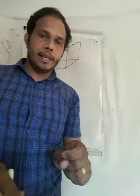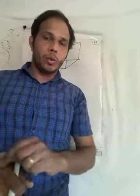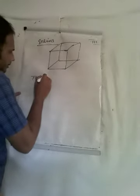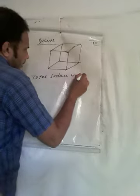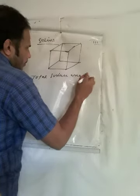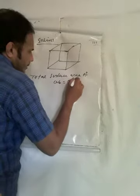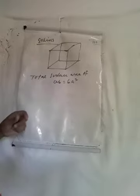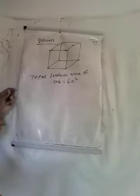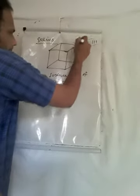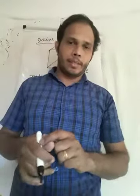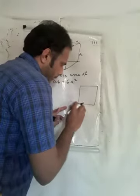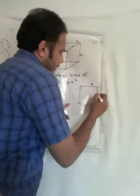We need to find the total surface area of the cube. The total surface area of a cube is equal to 6a², where a means one side. So how are we getting 6a²? Each face is a square face — a × a, like that.